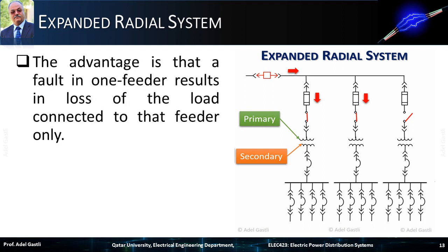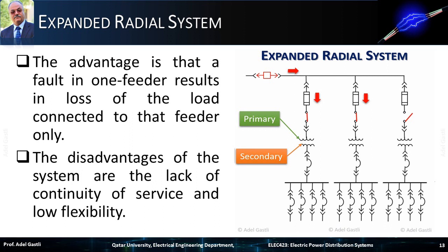The advantage is that a fault in one feeder results in loss of the load connected to that feeder only. While the disadvantages of the system are the lack of continuity of service and low flexibility. This animation illustrates the normal and faulty cases of operation of the expanded radial system. Notice that when a fault occurs on one of the feeders, that specific feeder will be disconnected from the bus bar, but the other two feeders will remain energized.